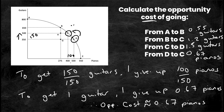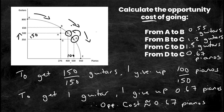Notice that all the opportunity costs except the last one are in terms of guitars. That's because going from A to B, B to C, and C to D we were moving down the PPF curve — giving up guitars and gaining pianos. For D to C we went in the opposite direction, giving up pianos and gaining guitars. Opportunity cost is always expressed in terms of what you are giving up, which is why that last answer is in terms of pianos.